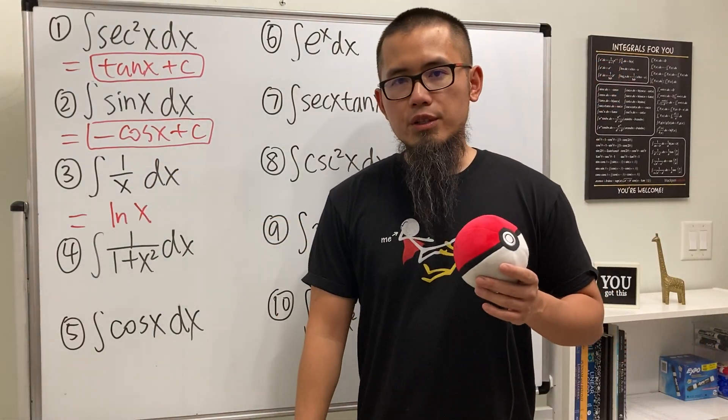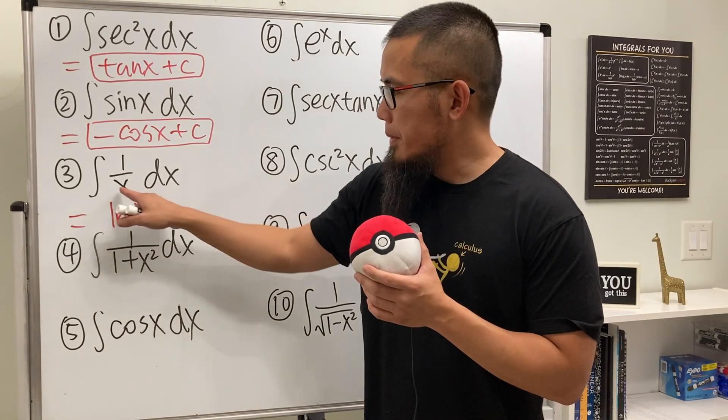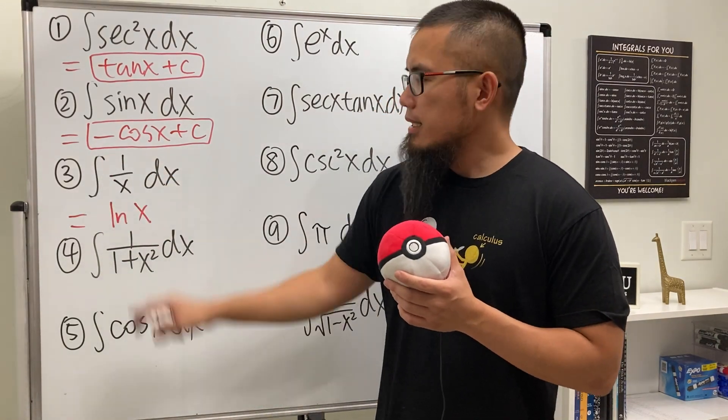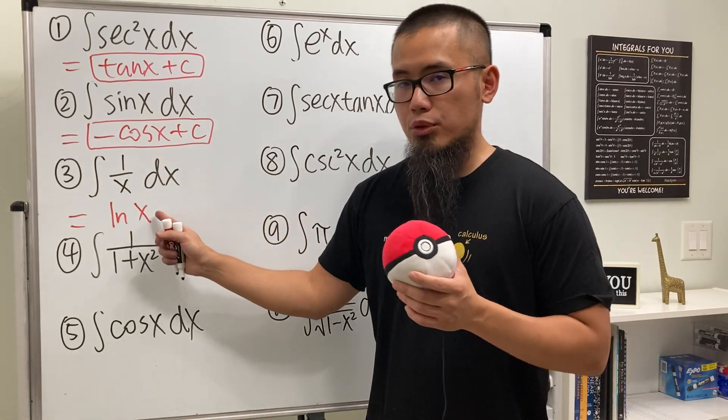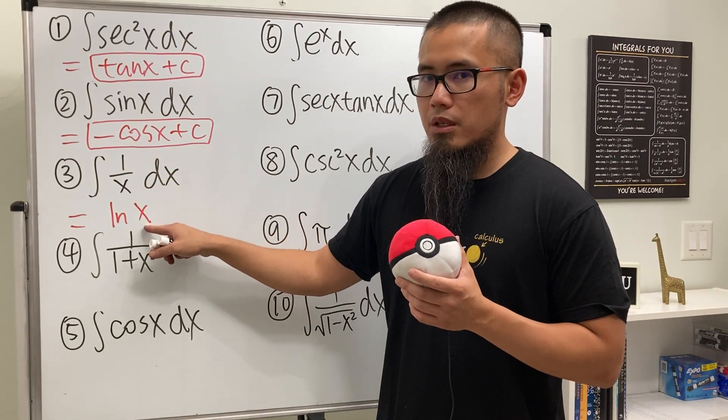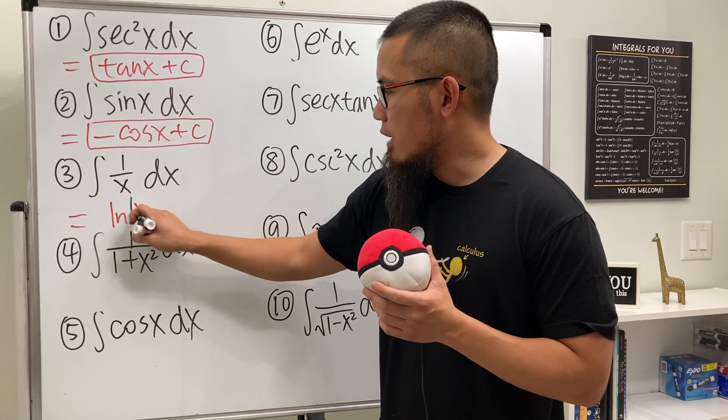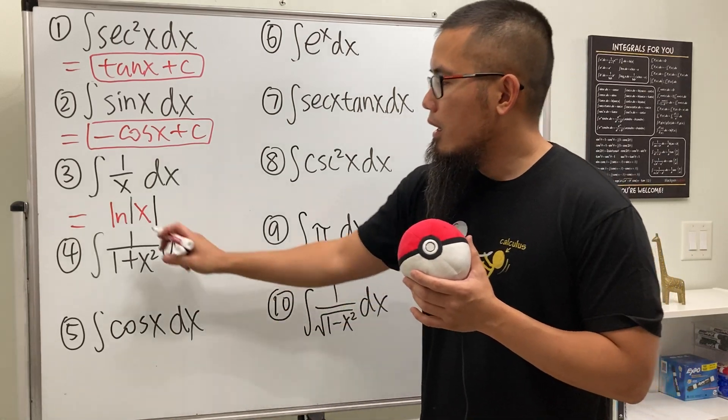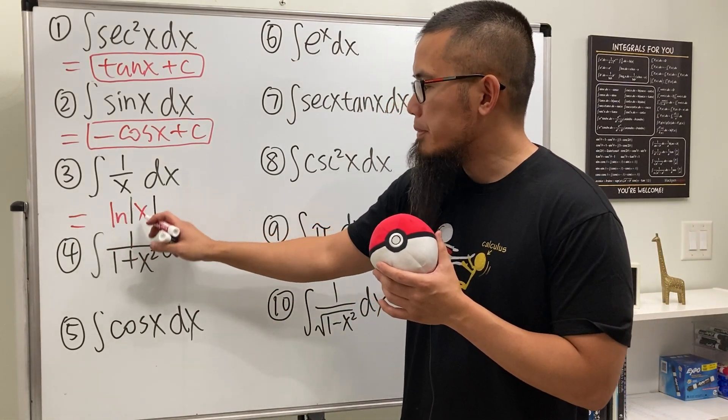However, here's a technical detail. Sometimes we might be integrating this function from negative 5 to negative 2. That's okay, but we should be able to plug in negative 5, negative 2 here. So let's go ahead and put down an absolute value around the x to ensure we can actually do that. And if you differentiate ln absolute value of x, you can legitimately get 1 over x.